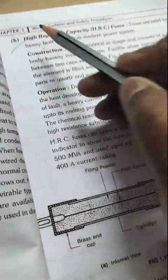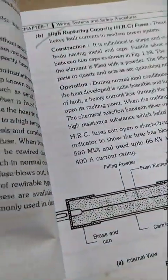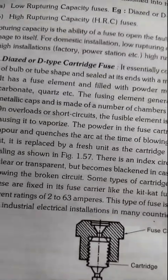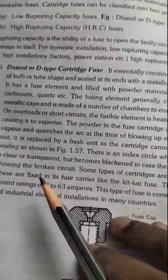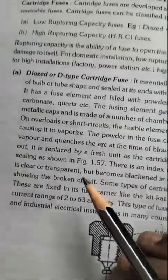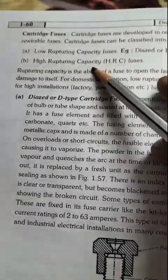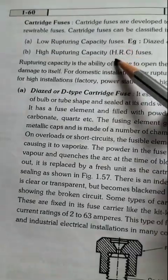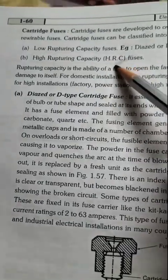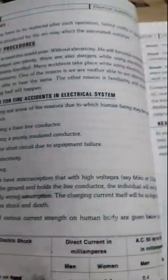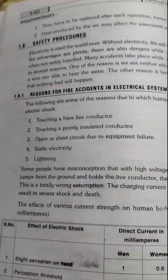High rupturing capacity fuse — that is one type in cartridge fuse. It will be 3 marks. Advantages. Next, coming to fire accidents.